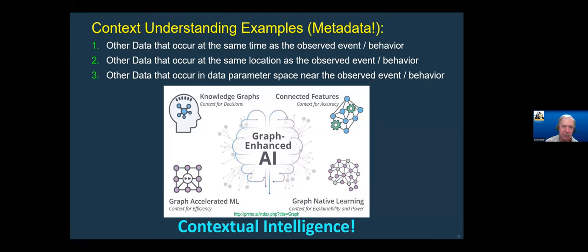What is context? In some way, you could say it's just metadata — other data about your data. It's other data that can occur at the same time or the same location as what you're observing — we have geospatial data. I believe you're going to hear about geospatial AI tomorrow — a whole segment on geospatial AI, which is a fantastic subject. After my 20 years at NASA, I spent a lot of time working on geospatial understanding, geospatial intelligence, and location intelligence. It's phenomenally useful in business, marketing, supply chain, healthcare, and medical treatments.